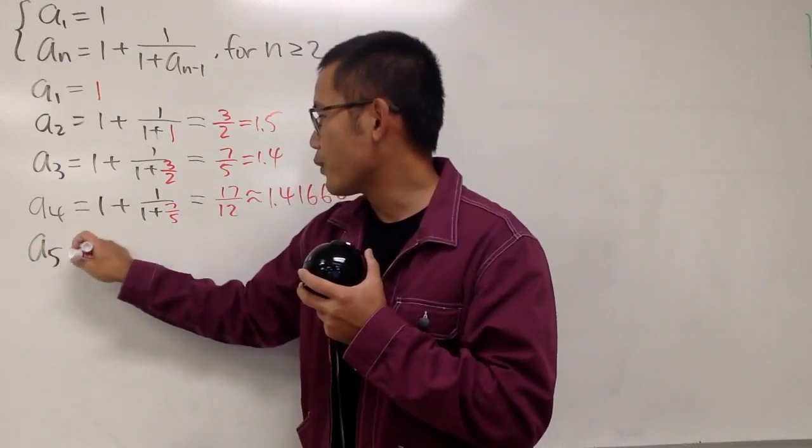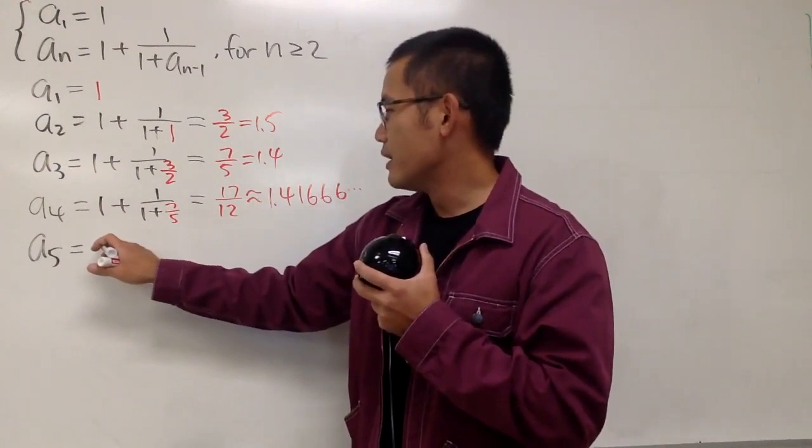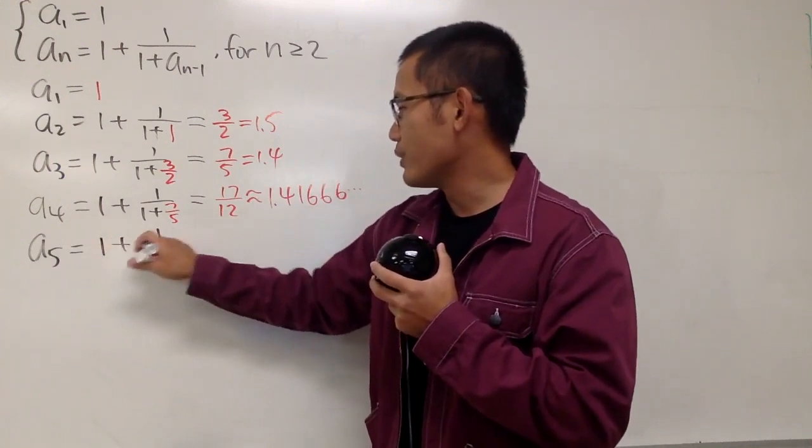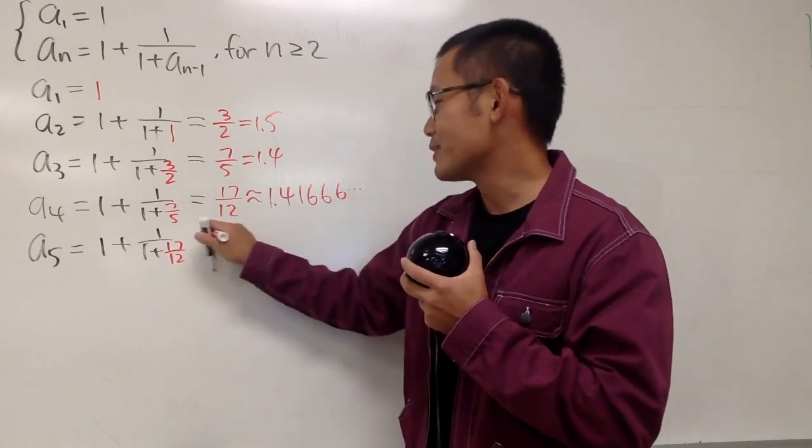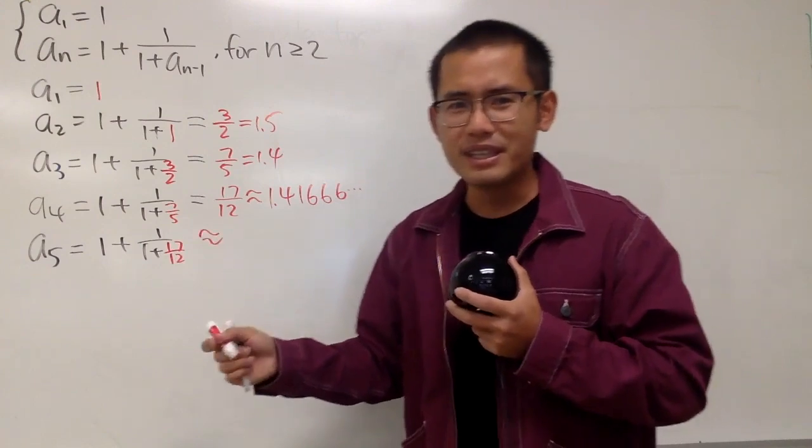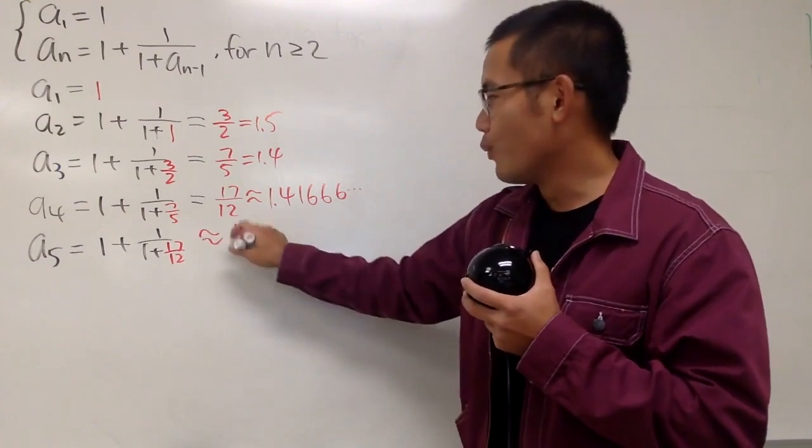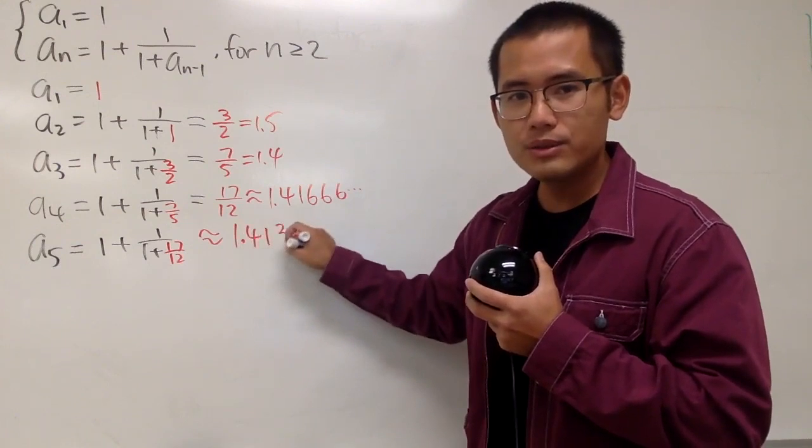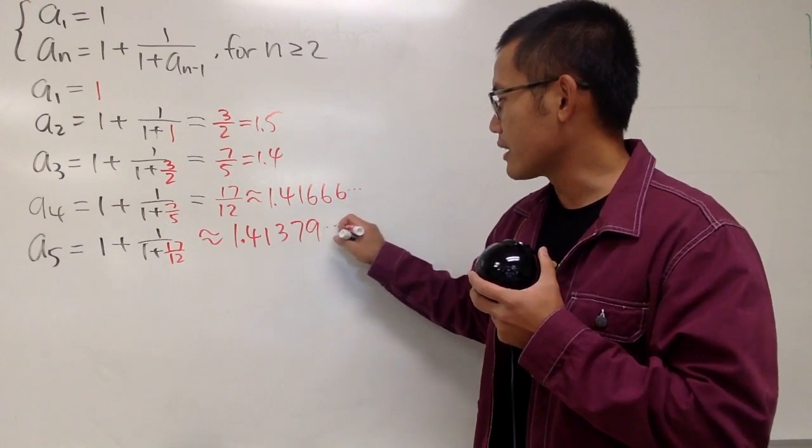If we have a₅, of course this is going to be that, and I'll just put this down right here for you guys. I'll just put this down as 1 plus 1 over 1 plus, which is 17 over 12. But this time I'll just tell you guys the decimal for this. It's going to be 1.41379 and then dot, dot, dot.